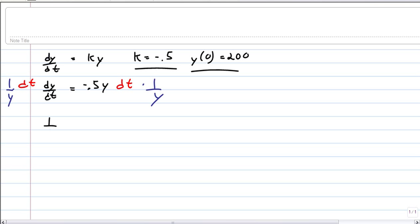So after you do that, you get 1 over y dy equals negative 0.5 dt.